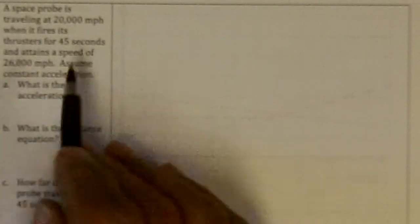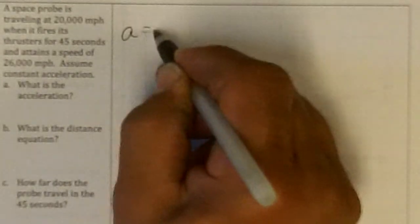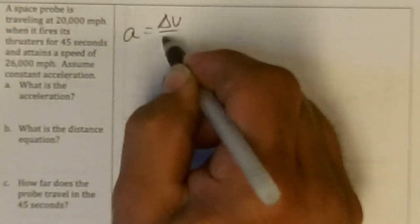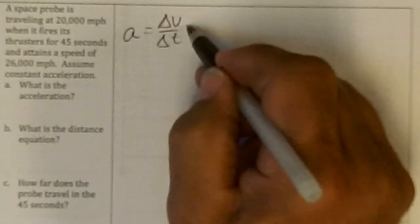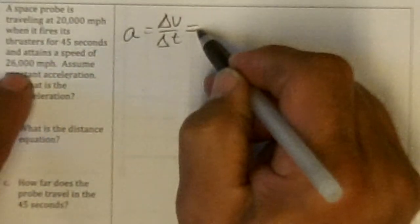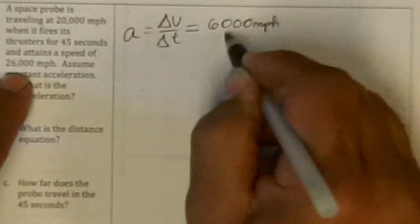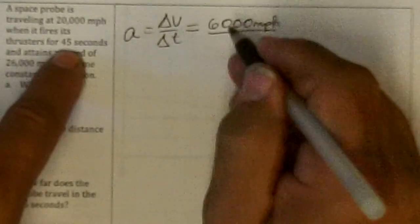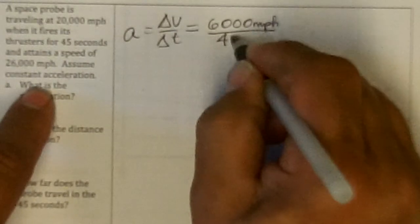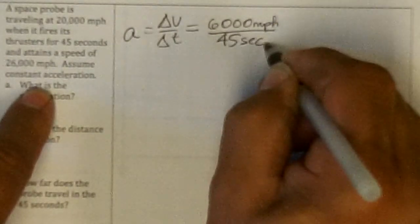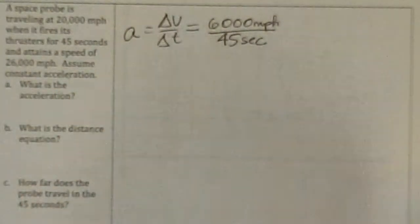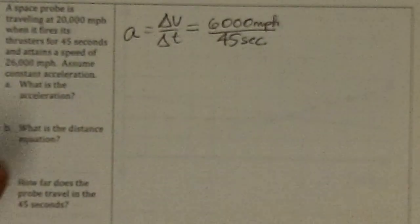Assume the acceleration is constant. Acceleration is change in velocity over change in time. So the change in velocity was 6,000 miles per hour and change in time was 45 seconds and we have hours and seconds mixed here. So that is the acceleration, but we need to put it in some sort of units that make sense here.